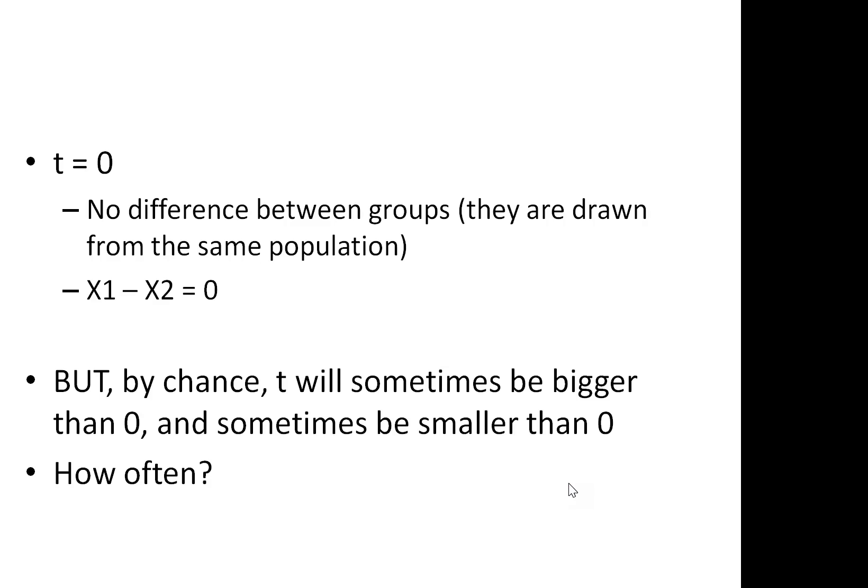Now, our t-value would be zero if there was no difference between the groups. If the two group means were exactly the same, we'd end up with a t-value of zero. If the second group mean is smaller than the first, we'll end up with a positive t-value. If the second value, the second group from which we subtract from the first group's mean is larger, then we'll end up with a negative t-value. By chance, t will sometimes be bigger than zero and sometimes it'll be smaller. But how often?